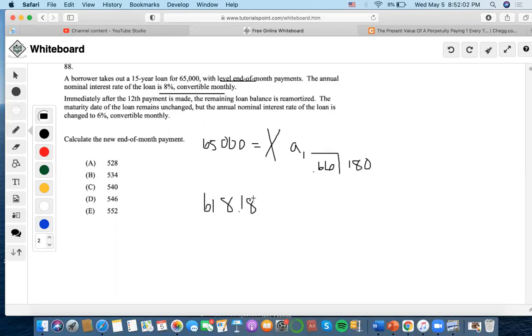Okay, now the next part says, immediately after the 12th payment is made, the remaining loan balance is re-amortized. Okay, so what is the remaining loan balance? Remaining loan balance is the amount of balance that is left in this loan. So what is that remaining after the 12th payment is made? Okay, that means that we'll do 180 minus 12, and we're going to get 168 left, right?